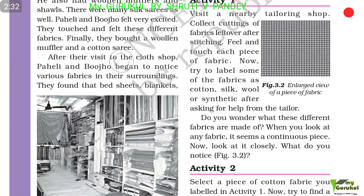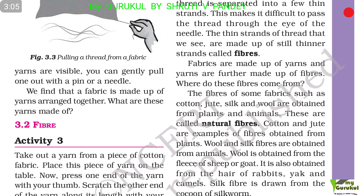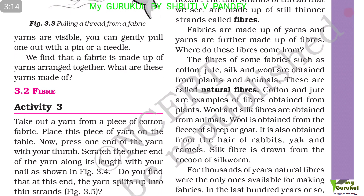When you look at any fabric it seems like a continuous piece. Now look at it closely — what do you notice? Select a piece of cotton fabric you labeled in Activity 1. Try to find a loose thread or yarn at one of the edges and pull it out. If no loose yarns are visible, you can gently pull one yarn out with a pin or needle. We find that fabric is made up of yarns arranged together.